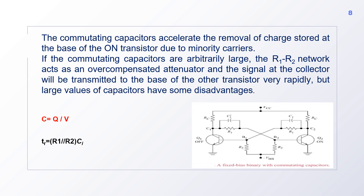What is the function of commutating capacitors? Once small capacitors are connected in parallel with the coupling resistors, commutating capacitors accelerate the removal of charge stored at the base of the transistor due to minority carriers. If the commutating capacitors are arbitrarily large, the R1-R2 network acts as an overcompensated attenuator, and the signal at collector C1 will be rapidly transferred to the base of transistor Q2.